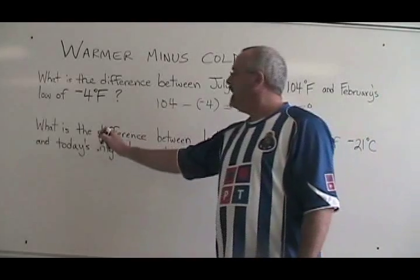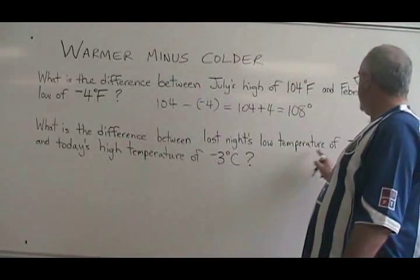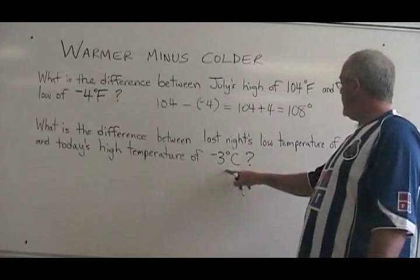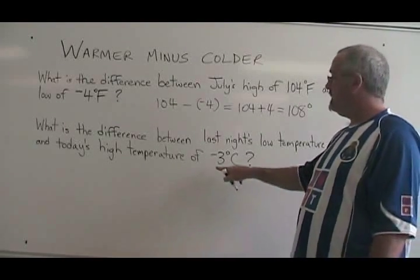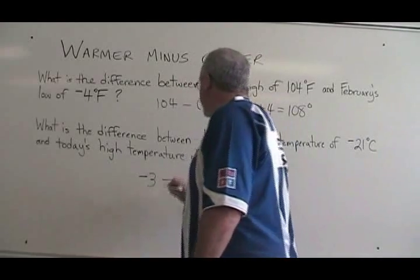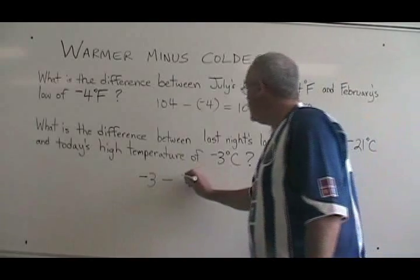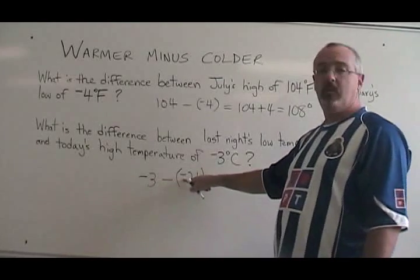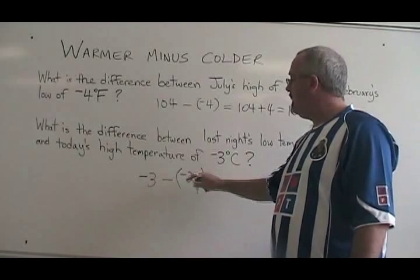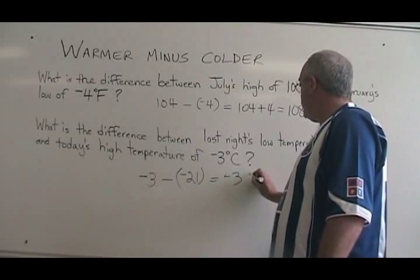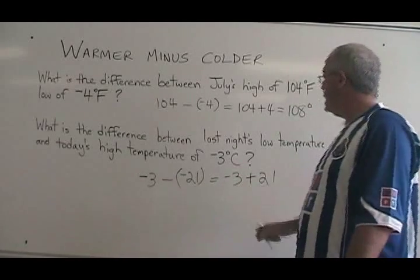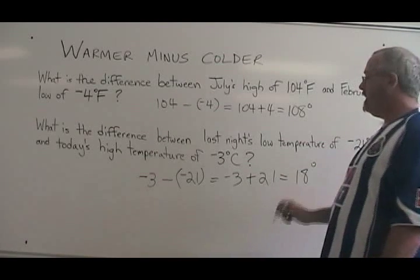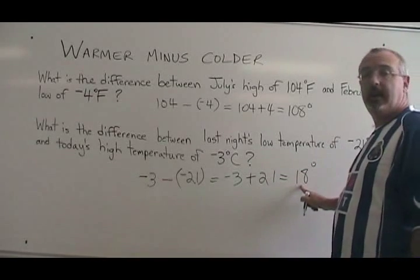The second problem says: what is the difference between last night's low temperature of minus 21 degrees Celsius and today's high temperature of minus three degrees Celsius? The warmer temperature between those two — you have to be careful — is minus three. So I write it first. Then I put a minus sign, and then I write the colder temperature, which is minus 21. I have to remember to include its sign. Minus three minus negative 21 — the two negative signs cancel — equals minus three plus 21, which equals 18, positive 18. The difference between minus 21 and minus three is indeed 18 degrees.